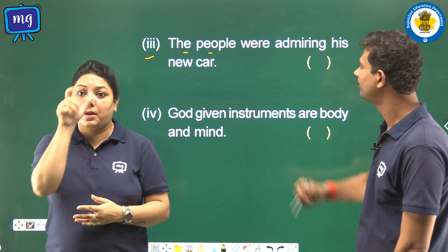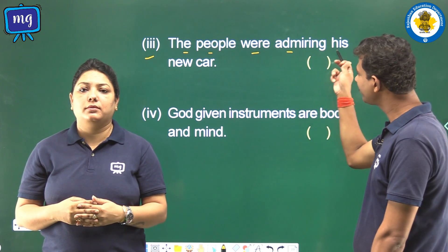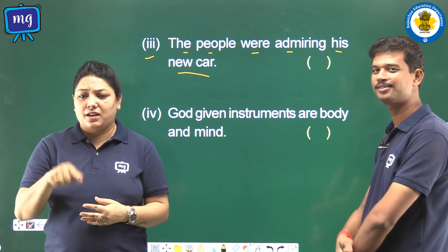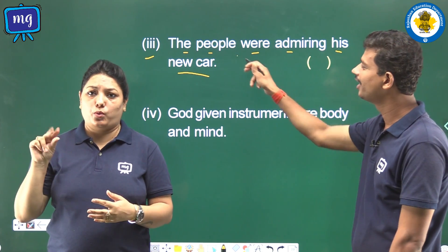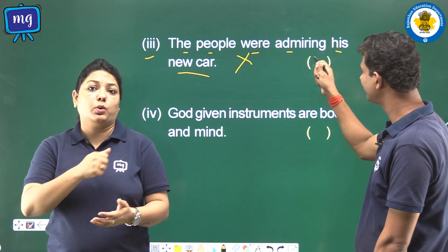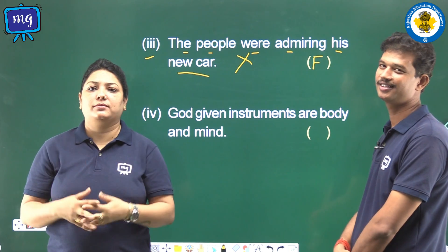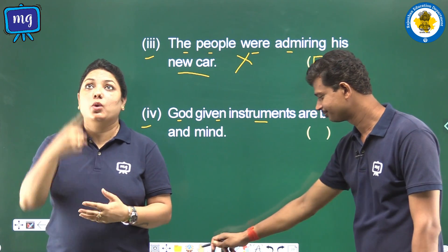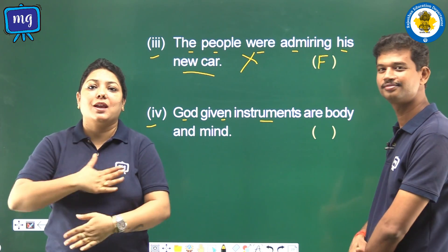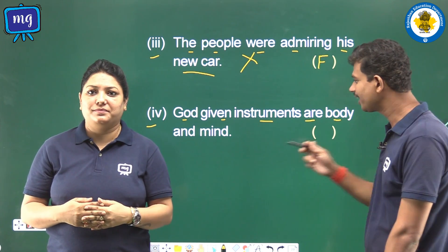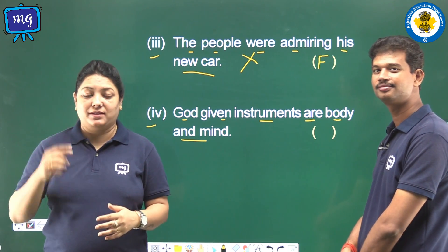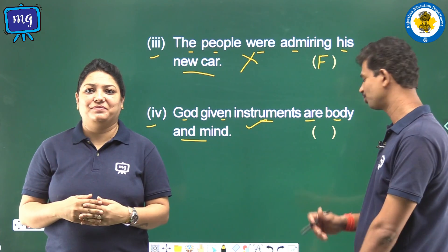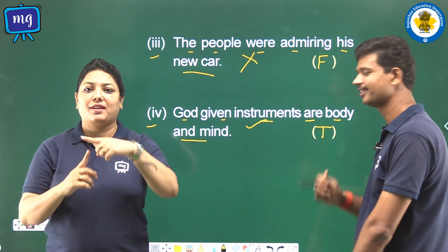Third: The people who are admiring his new car. Is it correct? No, it is also wrong. So we shall write F in the bracket. Fourth: God given instruments are body and mind. Is it correct? Yes, it is correct. So we shall write T in the bracket.